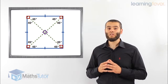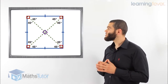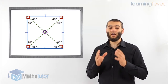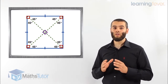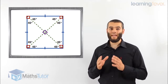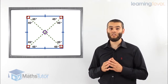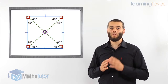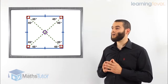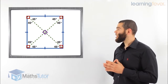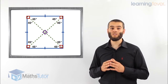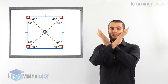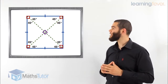The diagonals also bisect the angles they go through, cutting each 90-degree angle into 45 and 45 degrees. And the diagonals cut each other at right angles — they intersect right in the middle, as marked in purple.